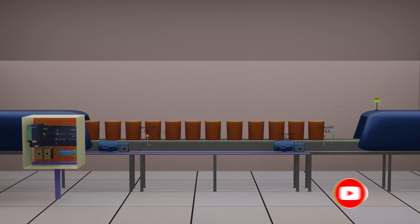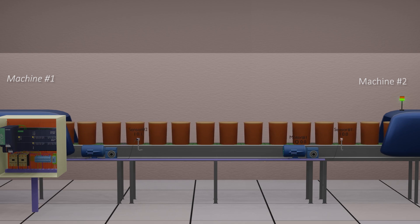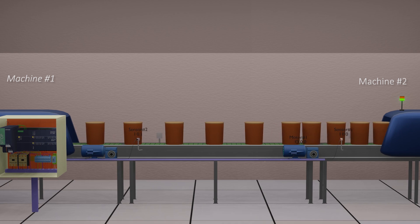Let's see the setup for today's tutorial video. Here we have two machines linked by a conveyor belt. This conveyor belt is transporting the buckets from one machine to another machine.